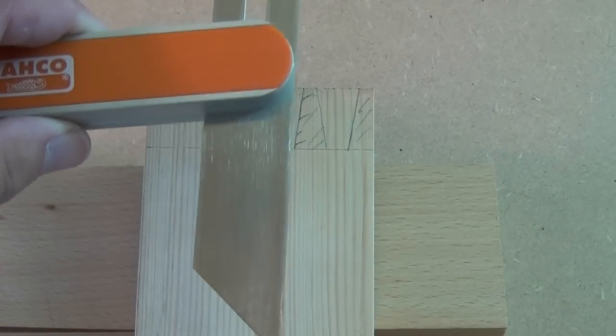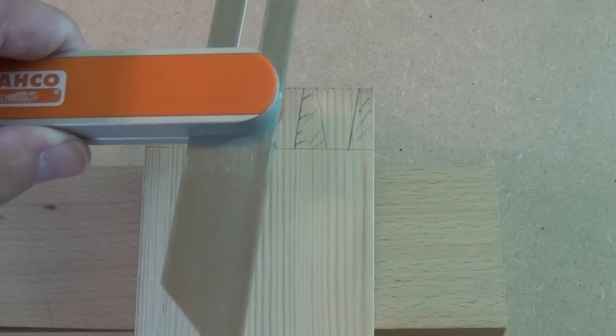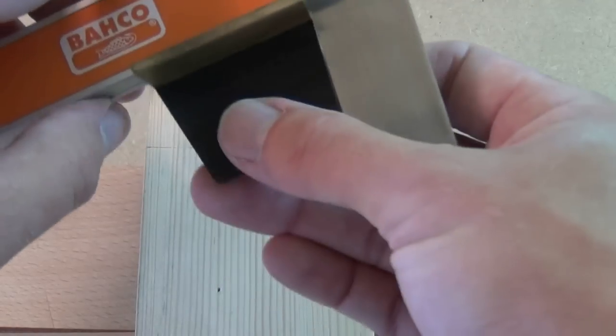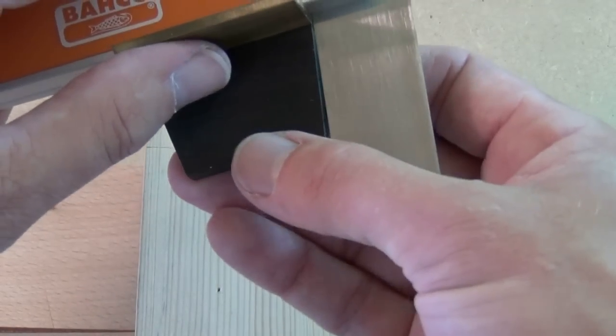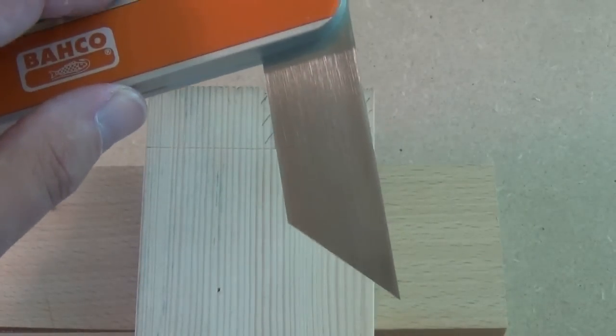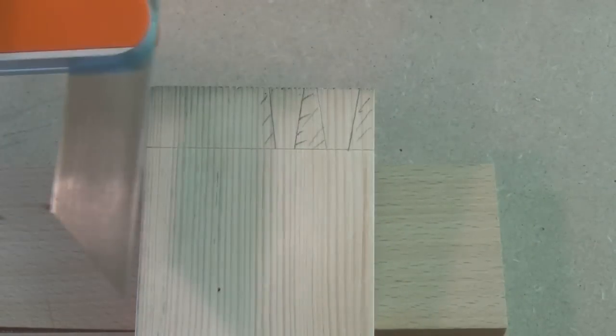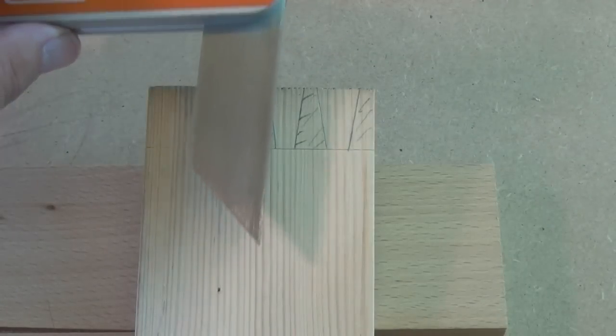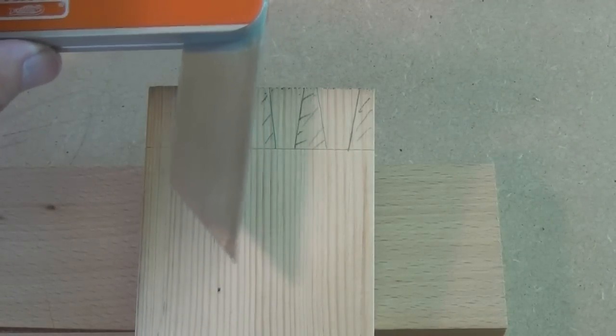And then we can use a bevel gauge. If we're using a bevel gauge, you can set whatever angle you like. You may have a gauge set up which will give you one in six, one in seven. You can set your bevel gauge to exactly that and mark out your dovetails. Or you can simply eyeball it. Pick whatever angle you like.